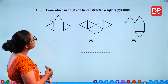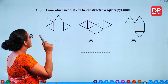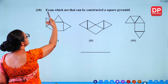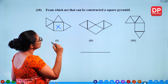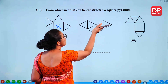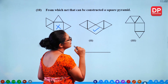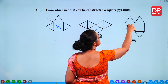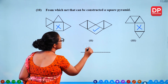From which net can a square pyramid be constructed? The first net has a square and 4 triangles but one triangle cannot connect properly — so you can't create a square pyramid from it. The second net — you can fold it and create a square pyramid correctly. The third net — you can't close it from the triangle. So net number 2 is the correct diagram.